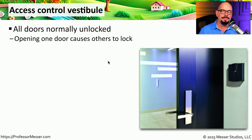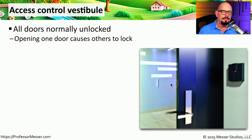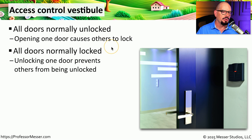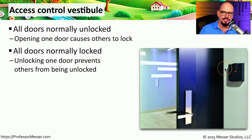There are different types of vestibules depending on the environment. In one configuration, all doors of the access control vestibule are unlocked, but when you open one door, all other doors lock themselves to prevent further access. This ensures that only one person or one group of people can move through the vestibule at any particular time. Other configurations have all doors normally locked, and when you unlock one door with an access card, all other doors remain locked.